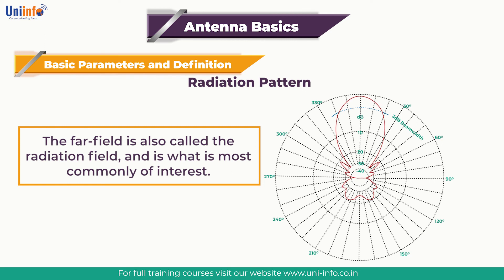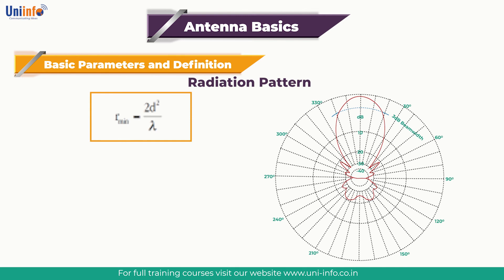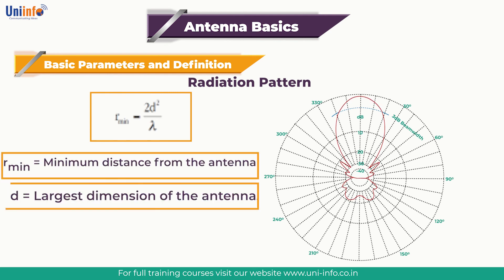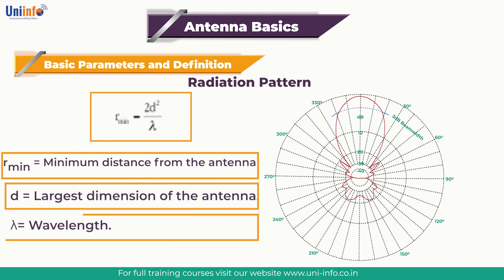The minimum permissible distance depends on the dimensions of the antenna in relation to the wavelength. The accepted formula for this distance is: R_minimum = 2D² / λ, where R_minimum is the minimum distance from the antenna, D is the largest dimension of the antenna, and λ is the wavelength.